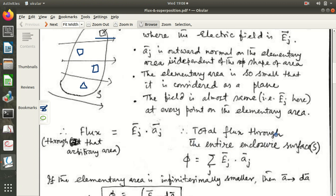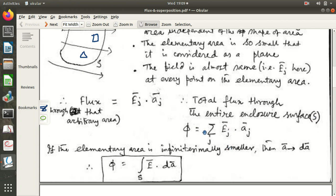So, the total flux through the entire enclosure, that means, the total flux through the entire enclosure, throughout the entire enclosure surface S is phi equal to EJ dot AJ summed over J.